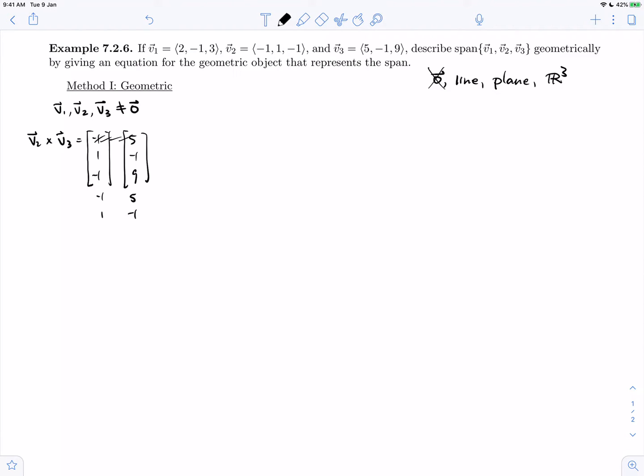If we do this cross product, we will see that we have 9 minus 1 is 8, minus 5 plus 9 is 4, and 1 minus 5 is minus 4. I'm going to simplify that as 4 times (2, 1, -1), but in particular that is not the zero vector, and therefore vectors v2 and v3 at least are non-parallel.